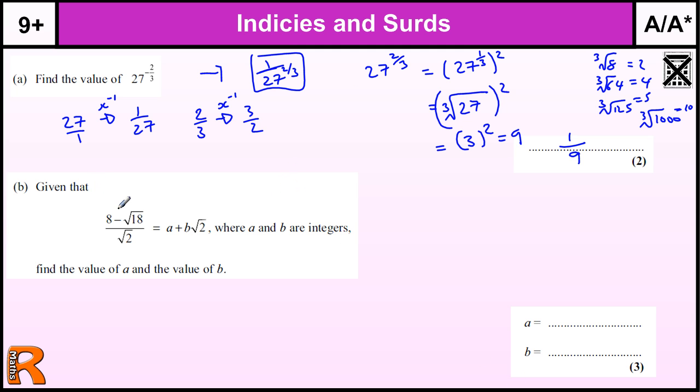The third question, this bottom bit, you've got to write it in the form a plus b times the square root of 2. Just give me a clue, it's got something to do with the square root of 2.